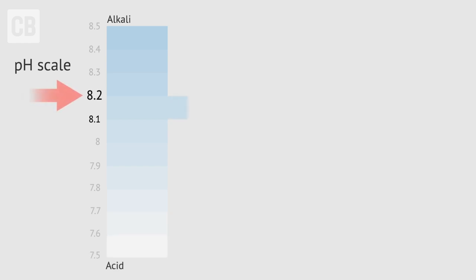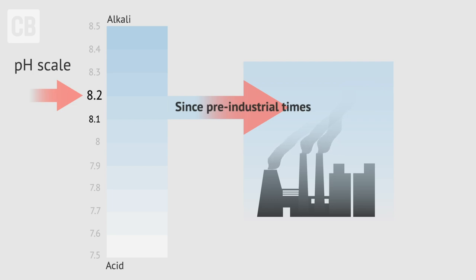Since the start of the industrial era, the overall pH of the world's oceans has fallen from 8.2 to 8.1.